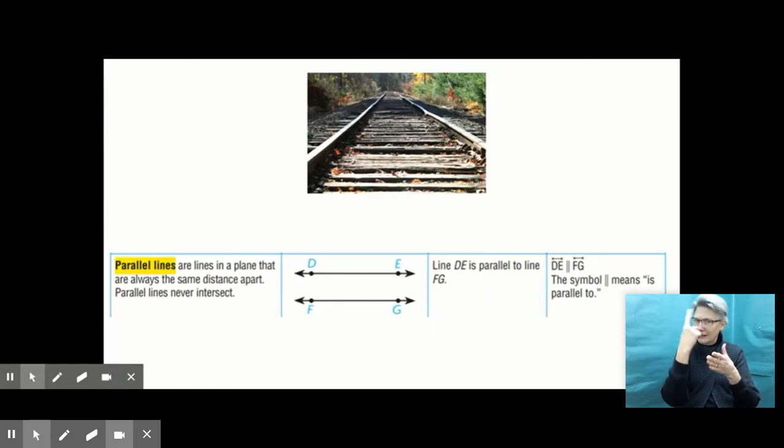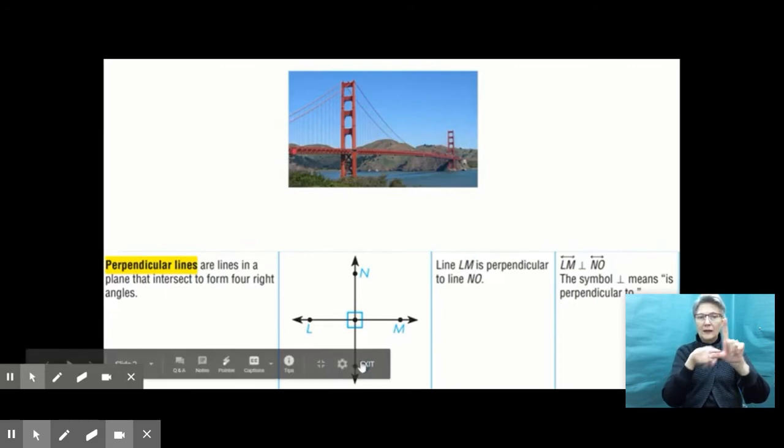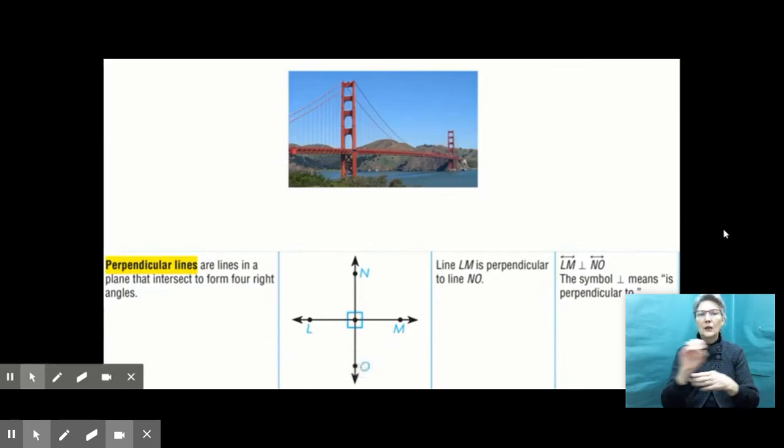Let's take a look at our next picture. The Golden Gate Bridge. I think I skipped my order here. That's okay. The Golden Gate Bridge is representing perpendicular lines. Perpendicular lines are lines in a plane that intersect to form four right angles. I noticed this picture here of these lines, line LM and line NO. I see that those are perpendicular because the way that they cross or intersect forms four right angles.